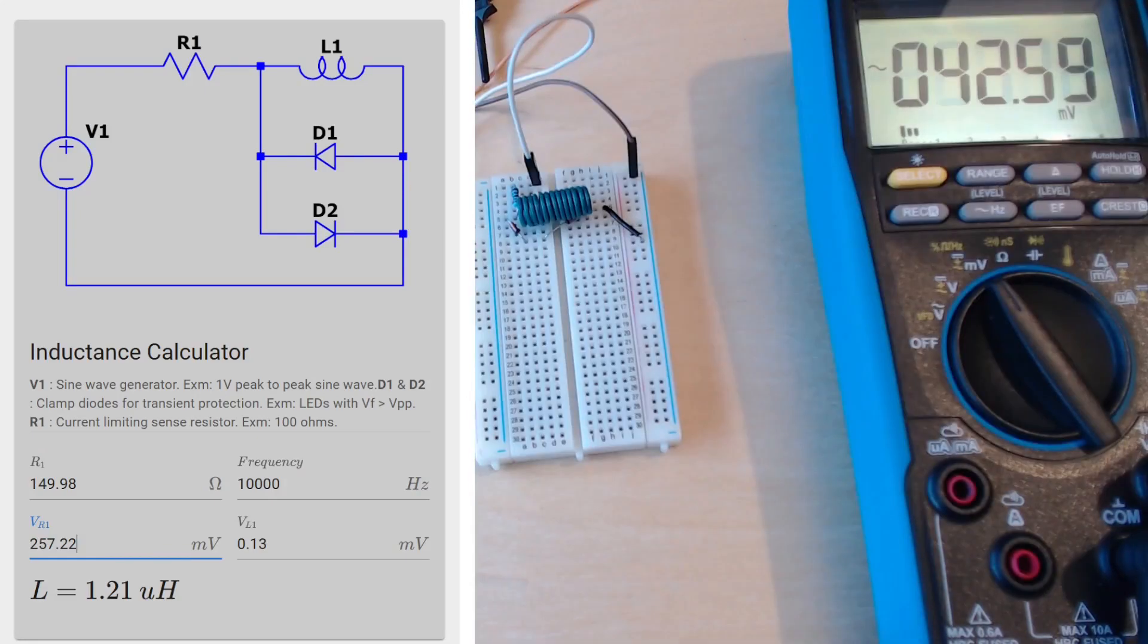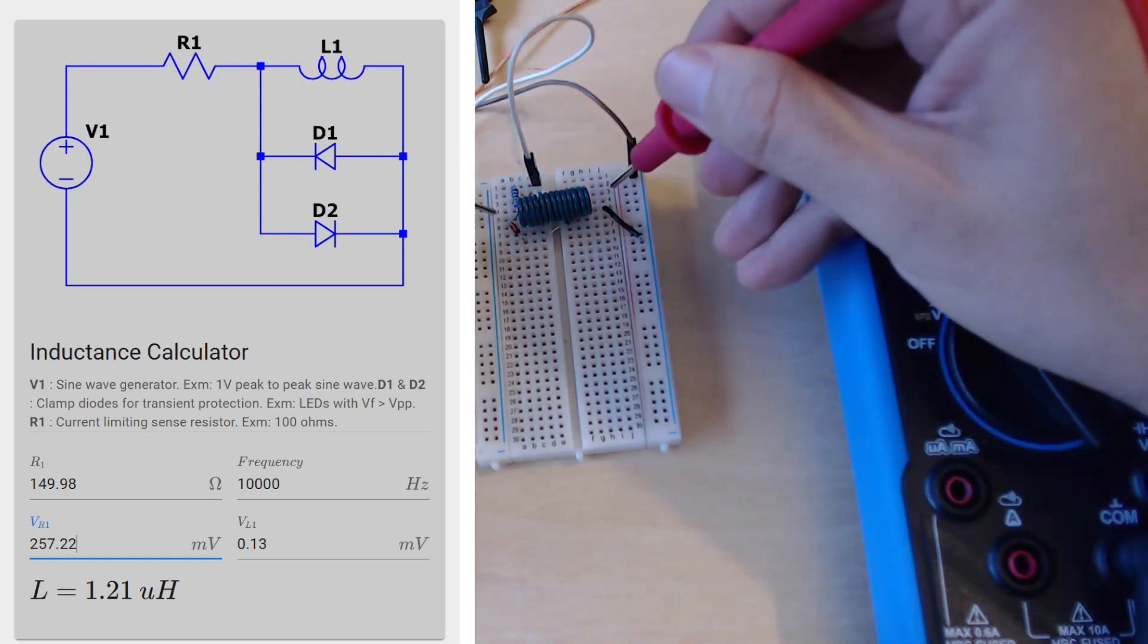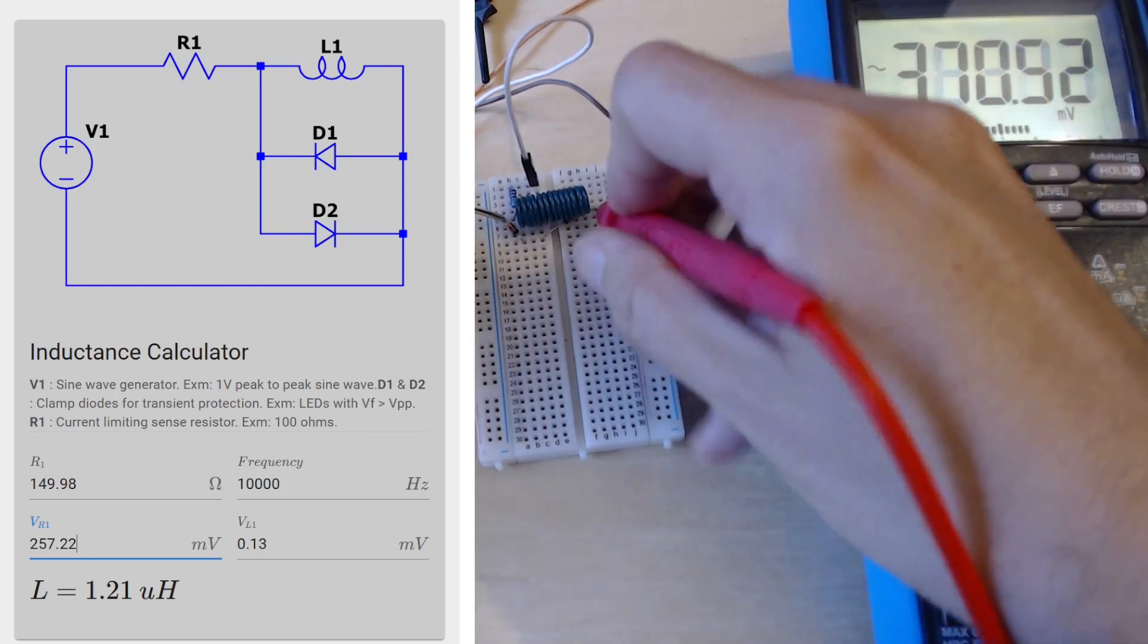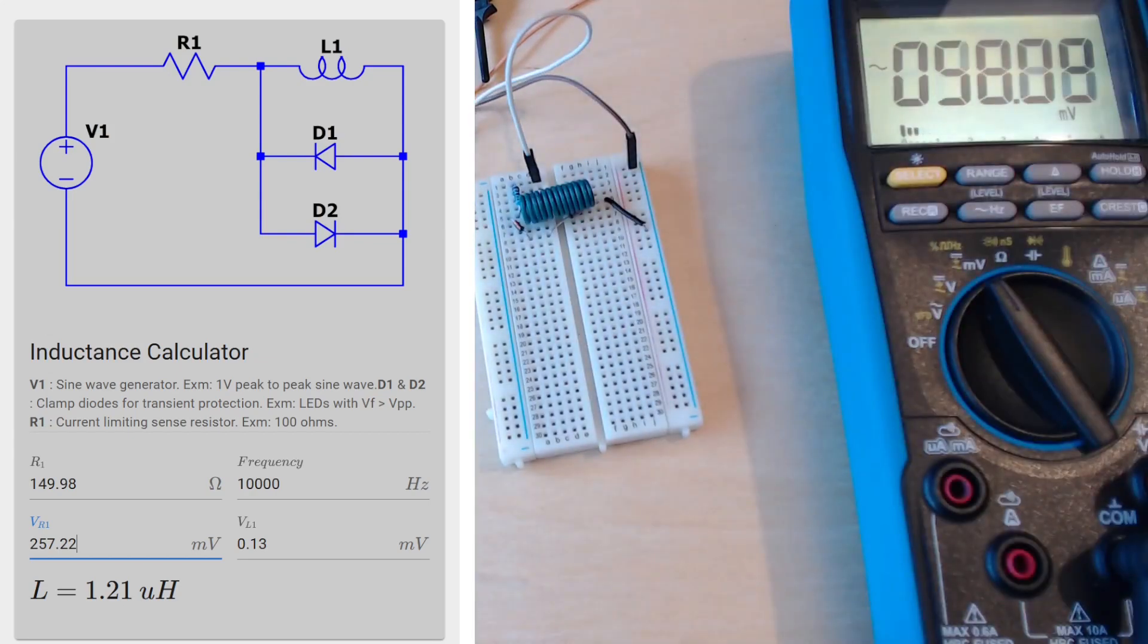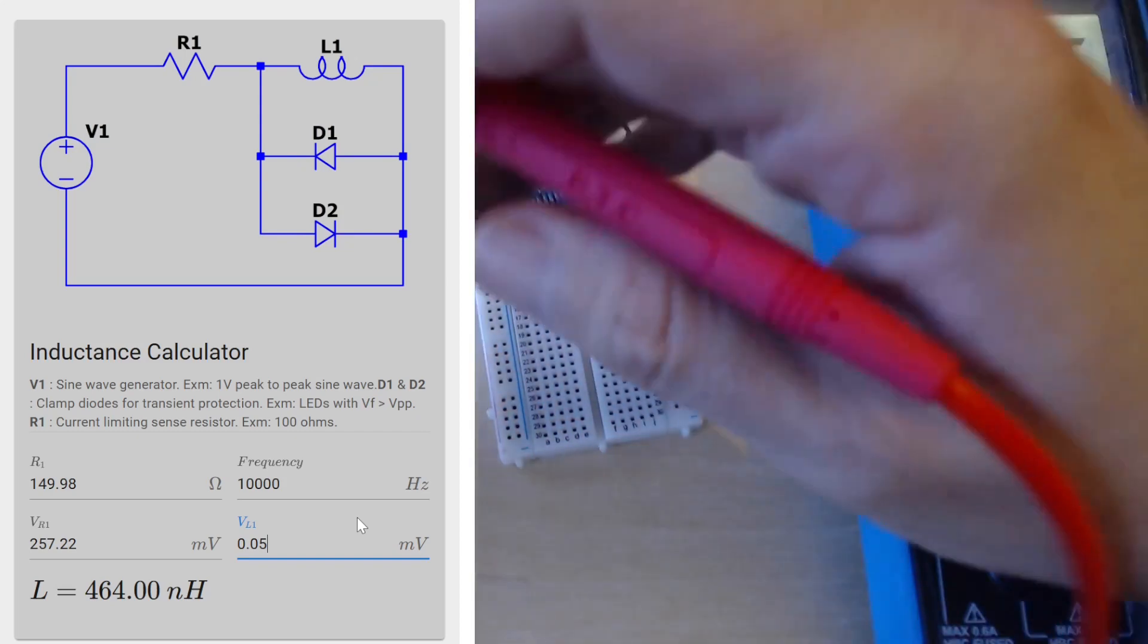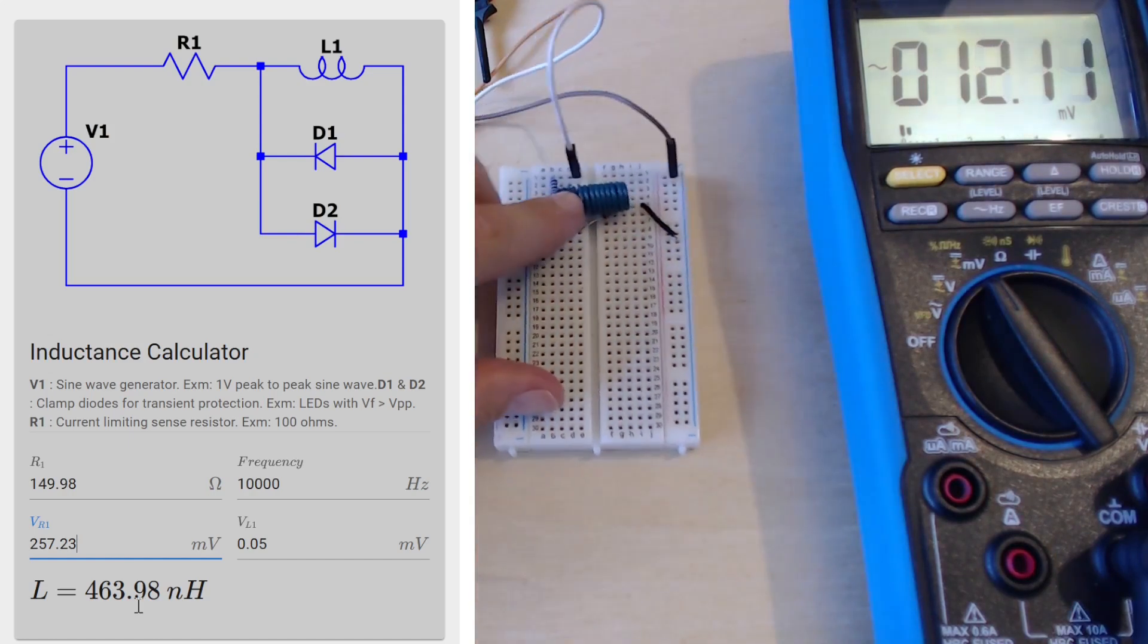Now let's pop it in there and see whether we can measure that 200 nanohenrys. Let's measure the voltage drop across our inductor if we can measure anything at all. It's so small you might not be able to measure anything after all. Let me see: 0.05 millivolts. That's good, we are able to measure something. And now let's measure the voltage across our resistor: 257.23.